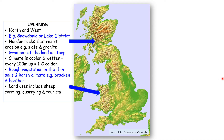Let's start by looking at the uplands — the mountainous areas. They're found to the north and all the way down the left, the west side of the country. Examples include Snowdonia, the Lake District, the Pennines, the Southern Uplands, the Grampian Mountains, and the Northwest Highlands. These are harder rocks that resist erosion, like slate and granite.